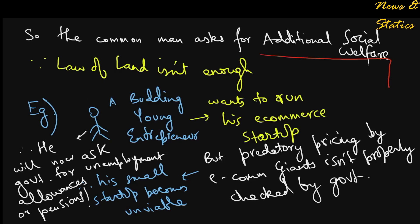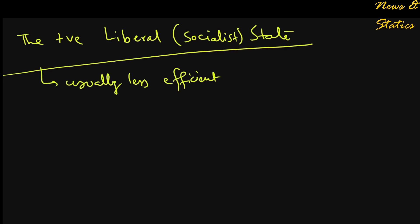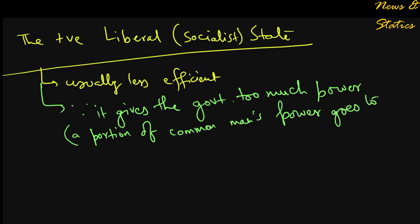Thus it is very common for a negative liberal free market economy to morph into a positive liberal or socialist state, which is usually less efficient. And the reason why it's less efficient is because it gives the government too much power and makes the common man, who otherwise could have happily lived of his own talents, dependent on the state provided handouts.